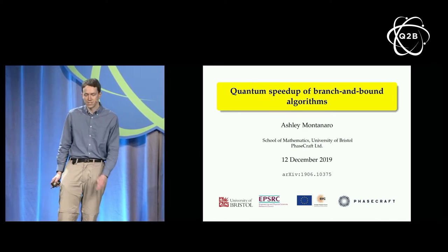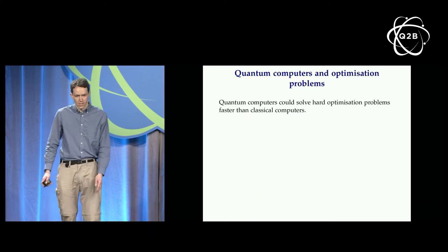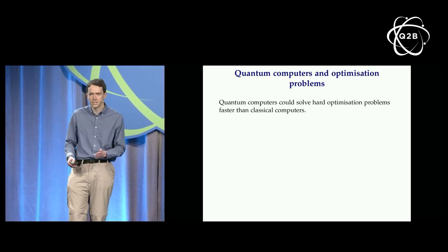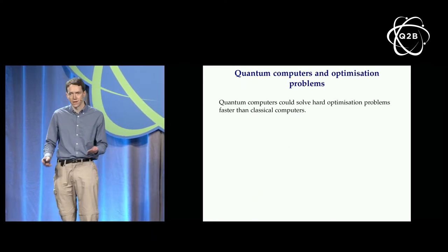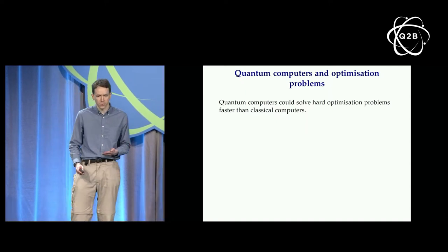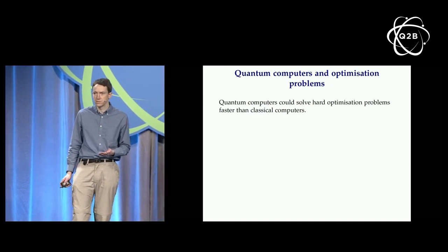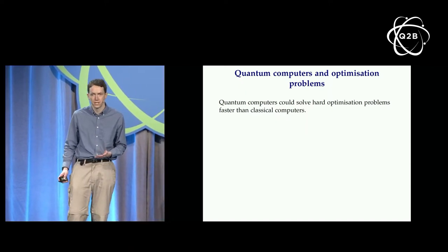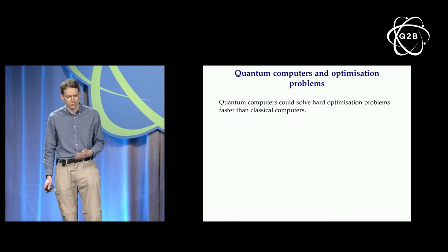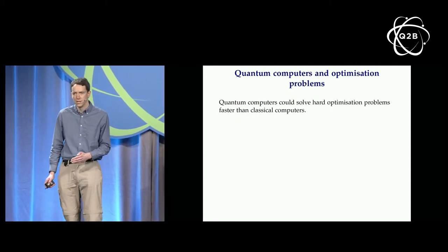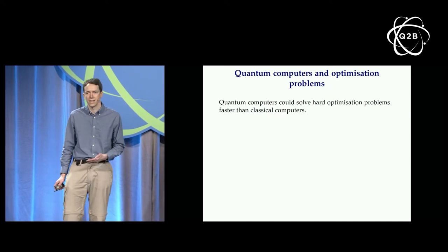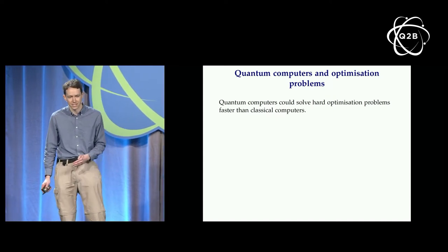Let's start out with branch and bound algorithms. As many of us would agree, it's possible that quantum computers could solve some hard optimization problems faster than classical computers, perhaps much faster, which is maybe one of the more exciting applications of these devices.